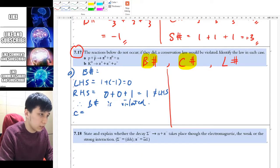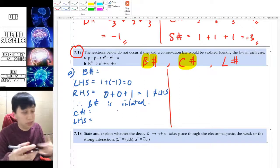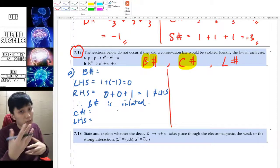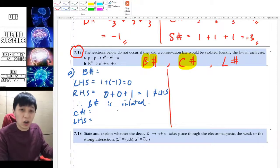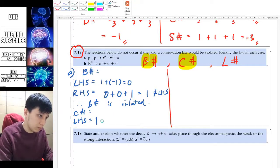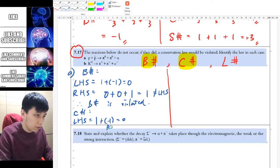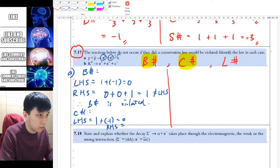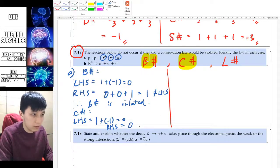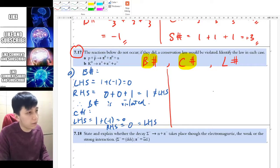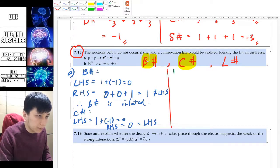Similarly, we can check the charge number. For left-hand side, we have proton and anti-proton. Proton is positive 1 and anti-proton is opposite, so negative 1. Again, it's 0. For right-hand side, we can see this is neutral, neutral, neutral. So obviously 0. This part is fine for charge number.